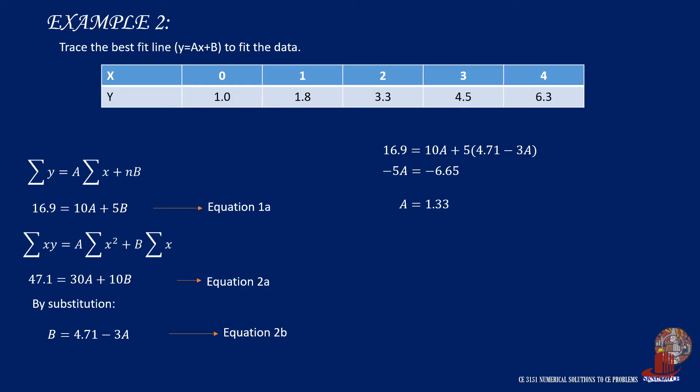Then by replacing a with 1.33 into equation 2b, b is then determined as 0.72.